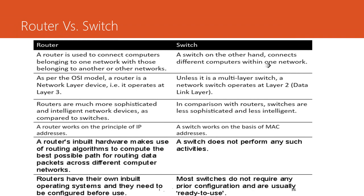Key differences between a router and a switch: a router is used to connect computers of one network to another network, while a switch connects different computers within the same network. A router operates at the network layer, which is layer three of the OSI model, whereas a switch operates at the data link layer, which is layer two of the OSI model.